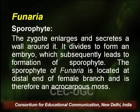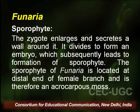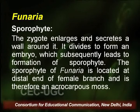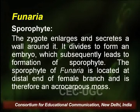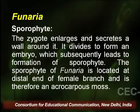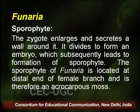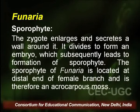After fertilization, a zygote is formed with a double set of chromosomes. The zygote is the first cell of the sporophytic generation. The sporophyte in case of Funaria is represented by the zygote. The zygote enlarges and secretes a wall around it, then divides to form an embryo which subsequently leads to formation of the sporophyte. The sporophyte of Funaria is located at the distal end of the female branch and is therefore an acrocarpous mass.